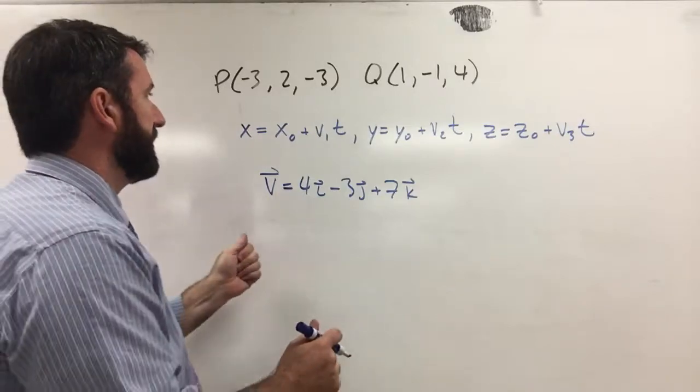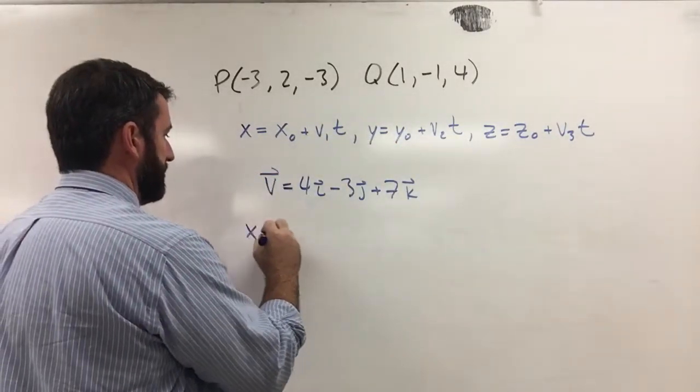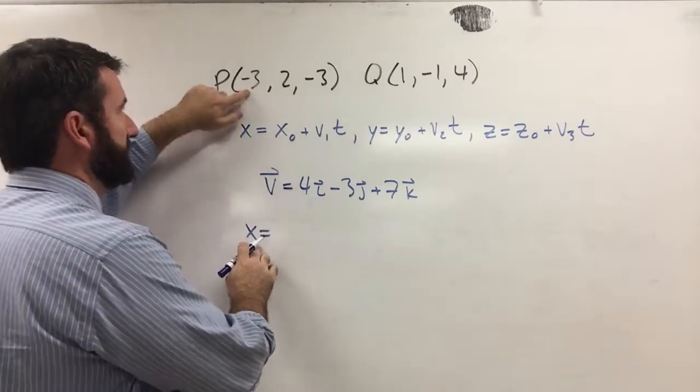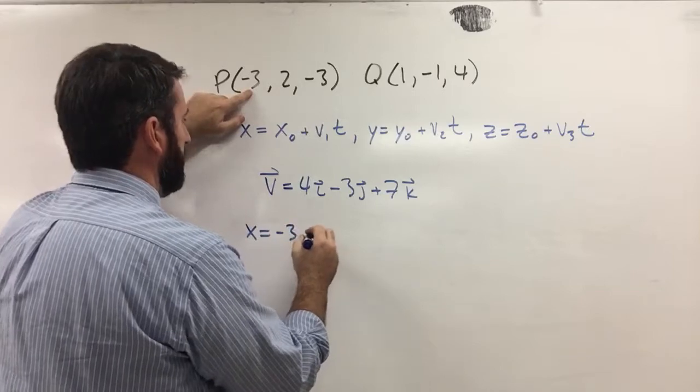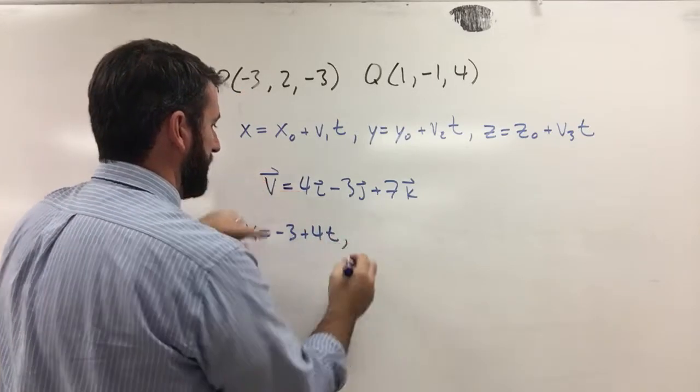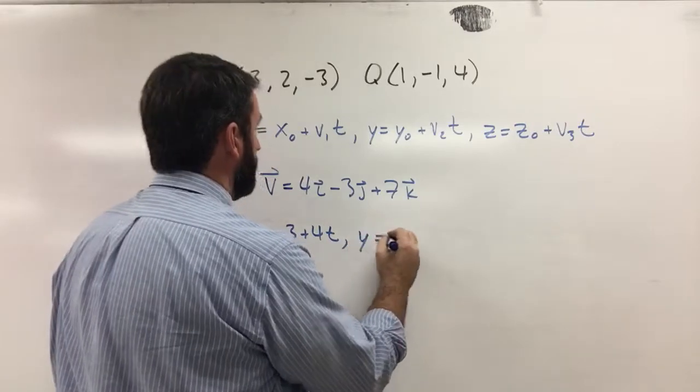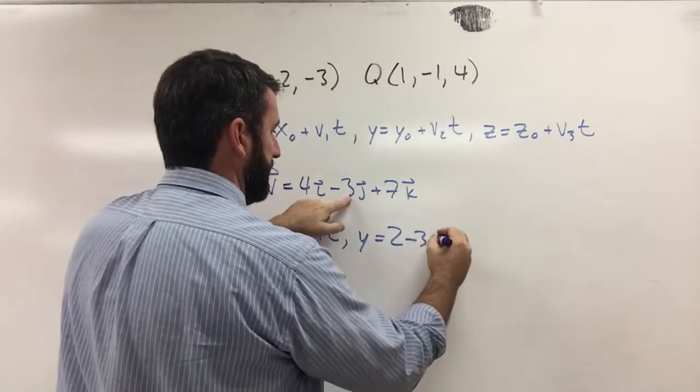And then we've got a vector that's parallel to that line, and so we can make these parametric equations. It's going to be x equals—and we'll take the x-coordinate here, negative 3—plus 4t. And then y equals 2 minus 3t.